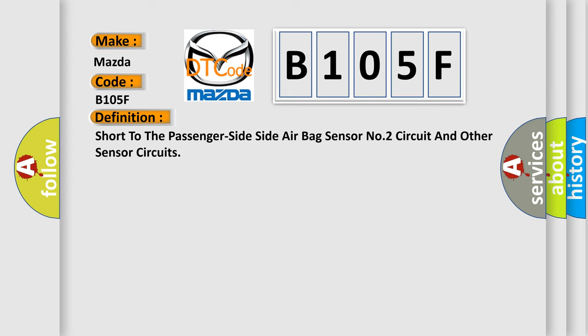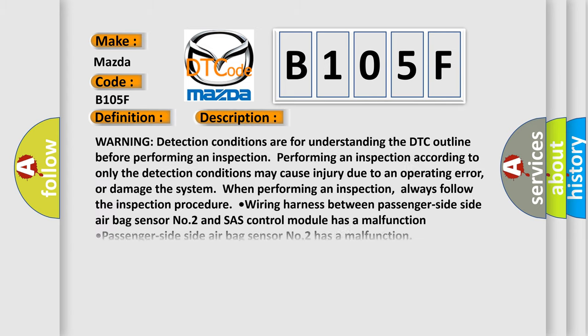And now this is a short description of this DTC code. Warning detection conditions are for understanding the DTC line before performing an inspection. Performing an inspection according to only the detection conditions may cause injury due to an operating error or damage the system when performing an inspection. Always follow the inspection procedure.